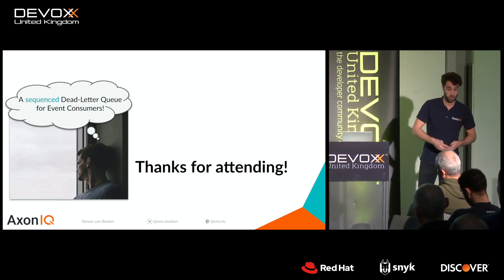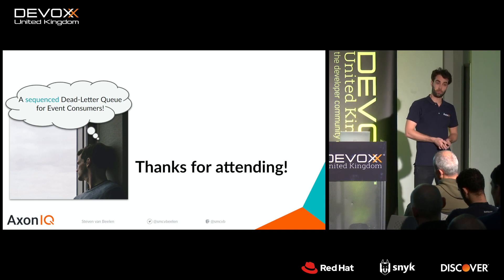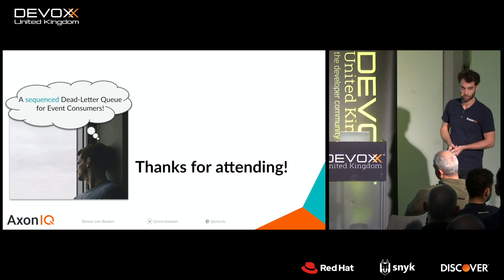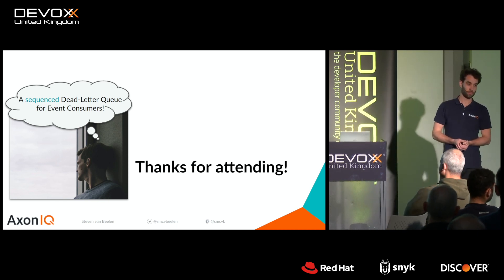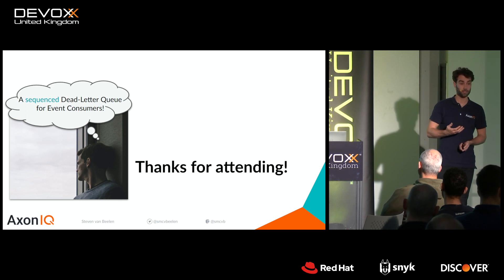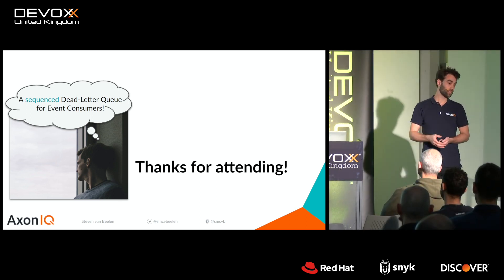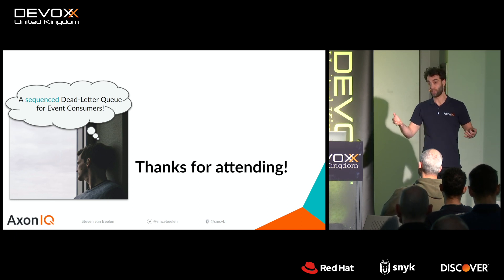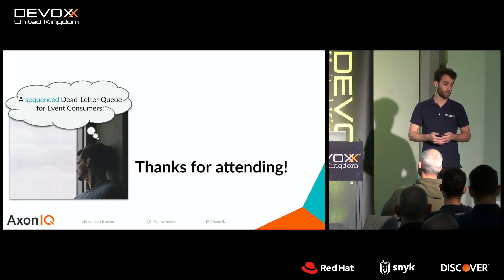Q&A: Yes, we implemented this for Axon Framework. We have components we call event processors, and at that layer you define the dead letter queue. It takes into account that it needs to check for every event — which means you want some optimization there, because for every event handled you need to check the queue. It is a heavy task, but otherwise you can't guarantee your ordering is maintained.